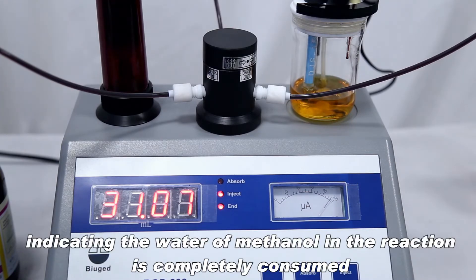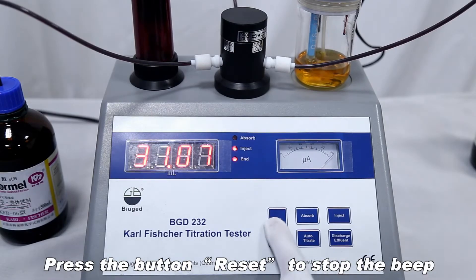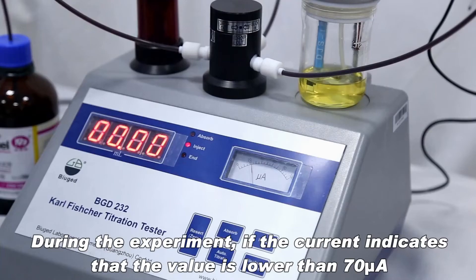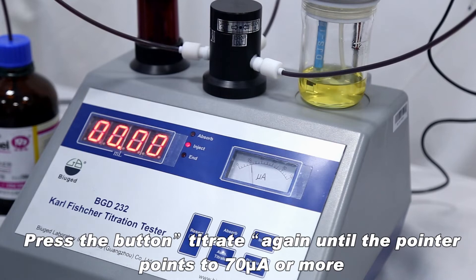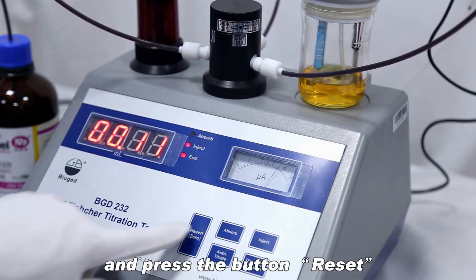Indicating the water in methanol in the reaction is completely consumed, press the button reset to stop the beep. During the experiment, if the current indicates that the value is lower than 70 astronomical units but the instrument has stopped titration, press the button titrate again until the pointer points to 70 astronomical units or more, and then press the button reset.